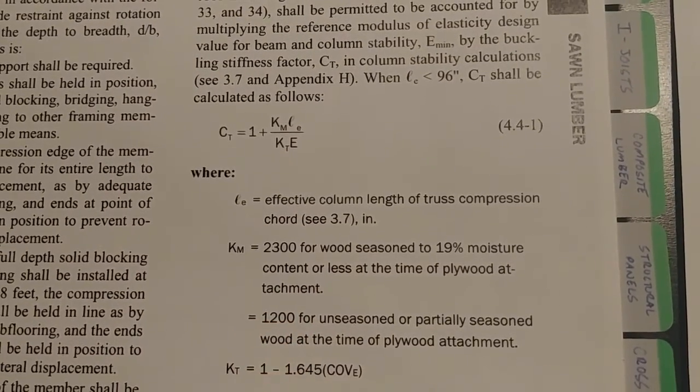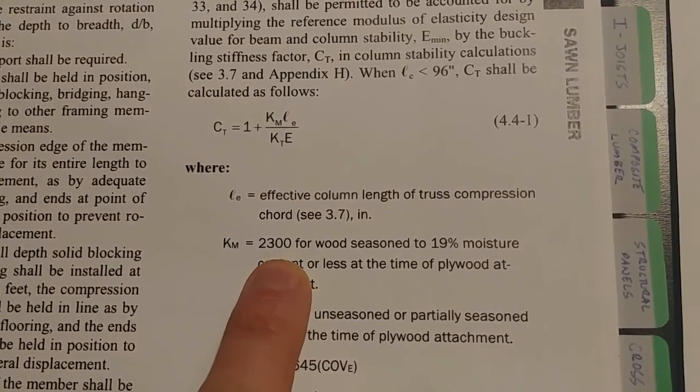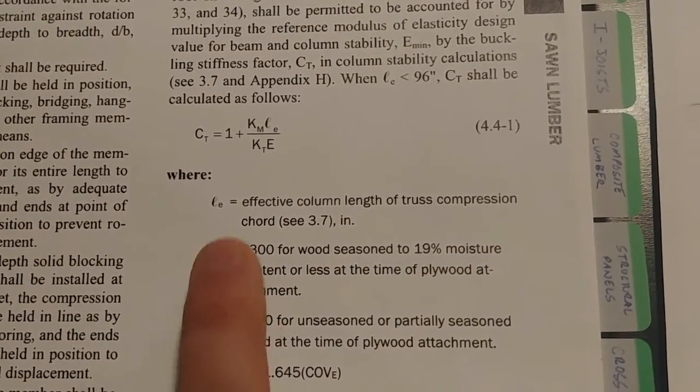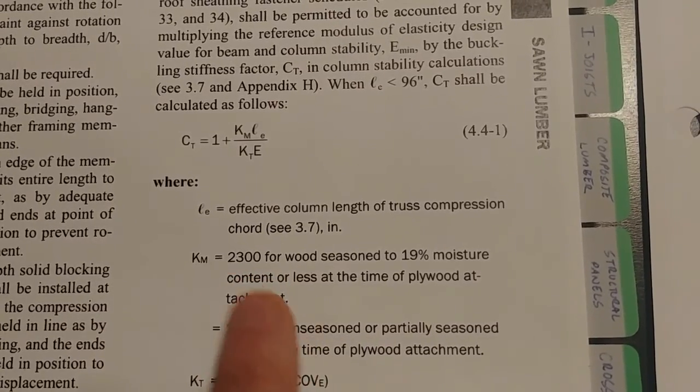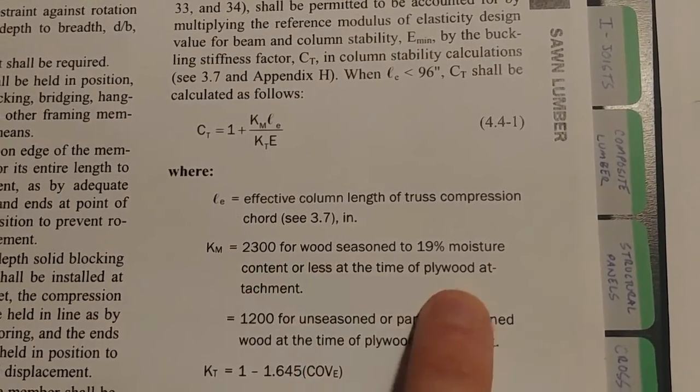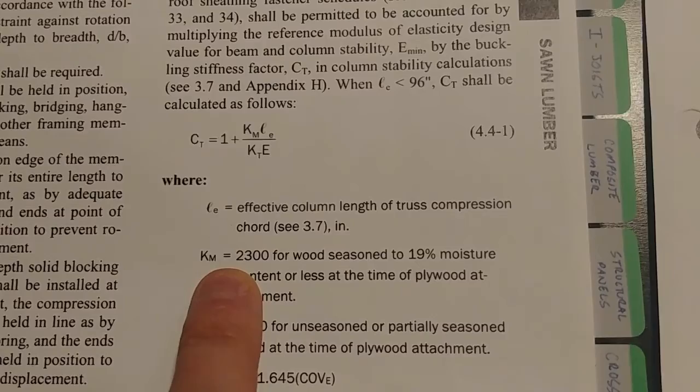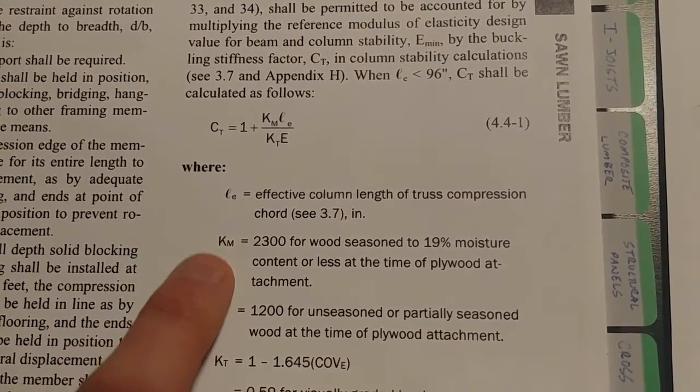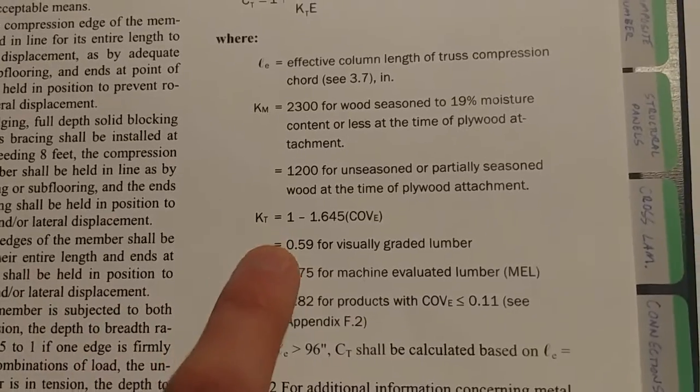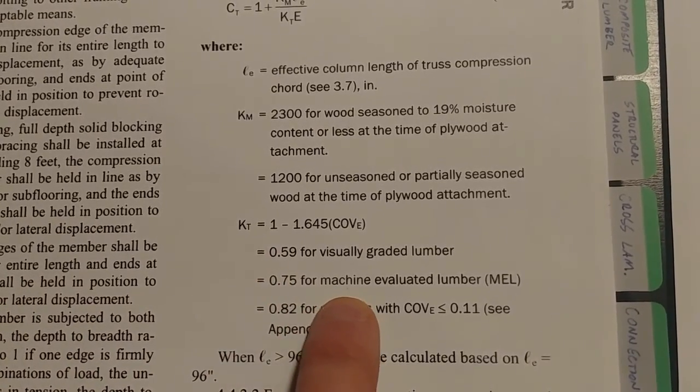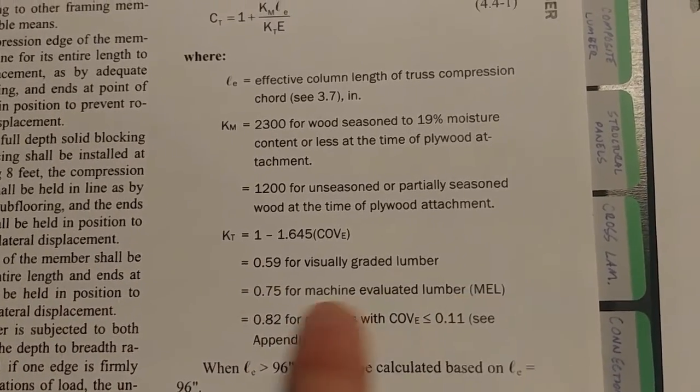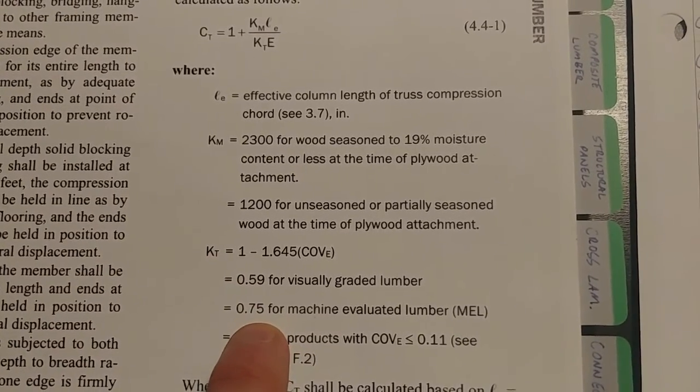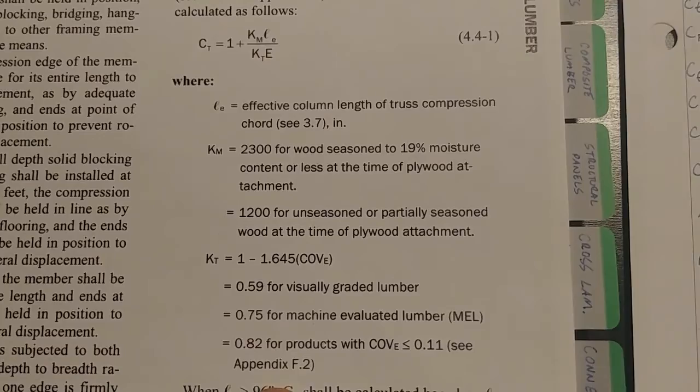Wait a minute, it lets us know, okay, KM is this for seasoned wood of to 19% moisture content, which is what we have, because that's our CM, which we assume is one. So we're in this. So we know our KM. LE, we already know. CT, we're going to assume our member is machine evaluated lumber, MEL. So KT equals 0.75. And then E, we knew from our supplement manual.